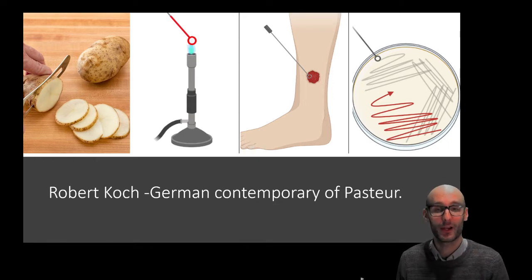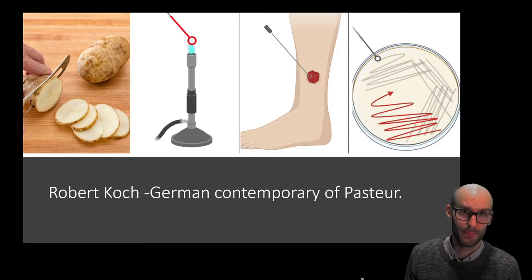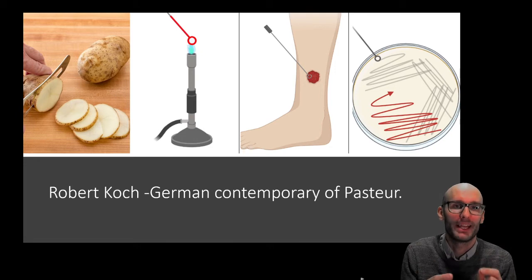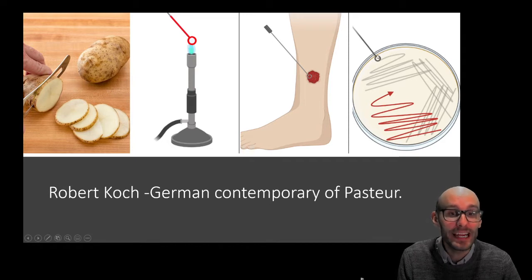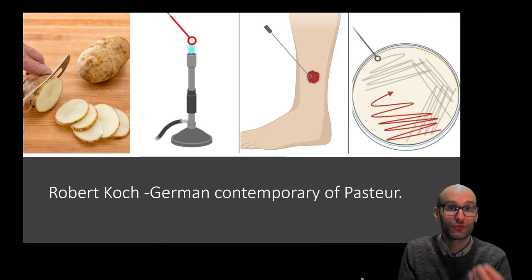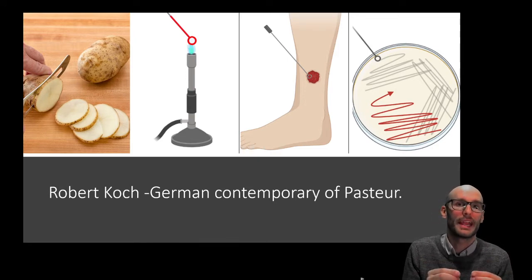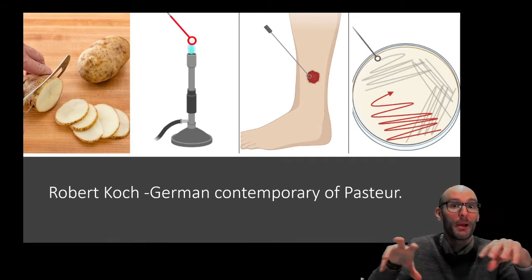Now that sounds weird. He would slice potatoes, sterilize a loop of metal, and swab a wound from an infected patient, for example, rubbing it across the potato. He would see the growth of individual colonies of bacteria. In a wound there might be lots of different kinds of bacteria, but if you streak it very dilutely across the potato skin, a single bacterium will drop off and turn into a colony. So you can end up with individual colonies of individual species and break it up by species.